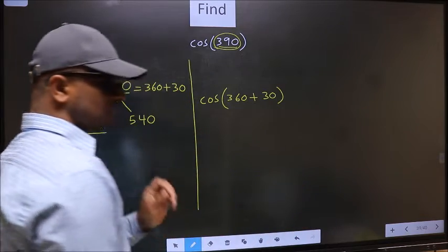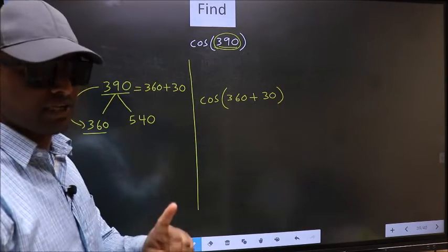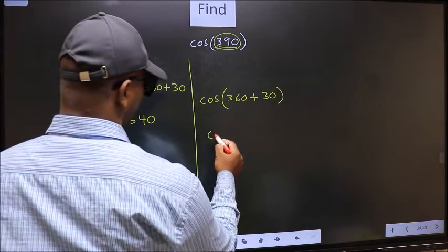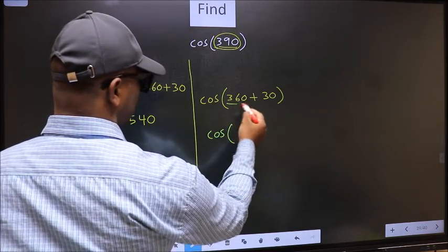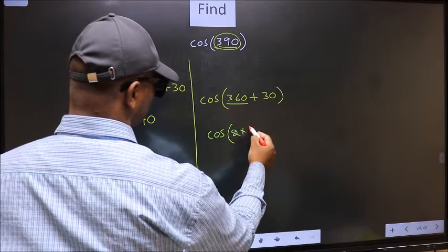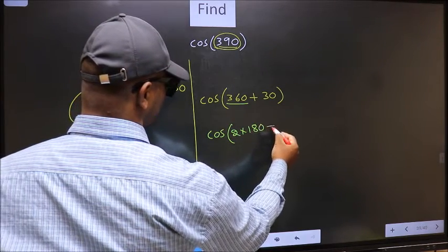This is step 1. Next, in place of 360, we should write 2×180+30.